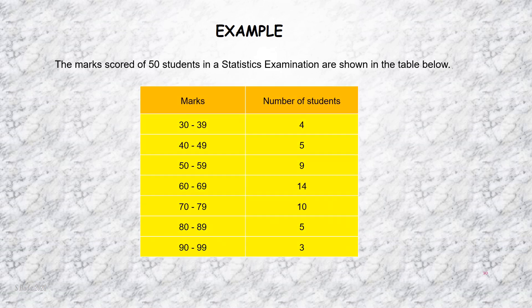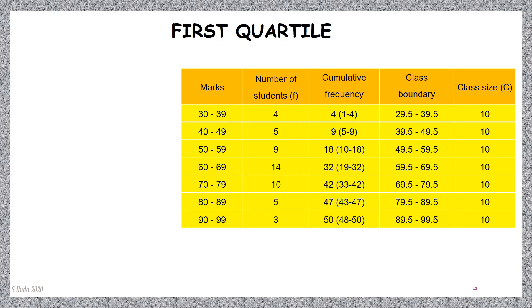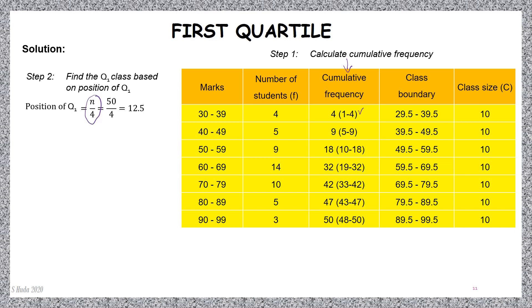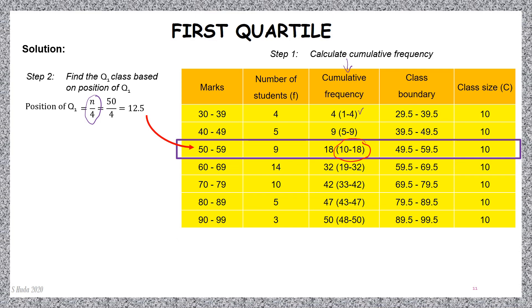We proceed to group data. For example, to calculate first and third quartile — marks and number of students. How to calculate first quartile for group data: first step, calculate cumulative frequency and determine the interval for each class. Next, find the position of Q1 using the formula N/4, giving position 12.5. Since 12.5 is in between cumulative frequencies 10 and 18, that row becomes the Q1 class.